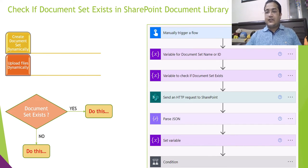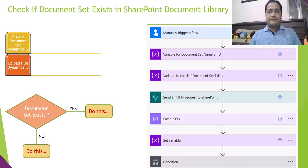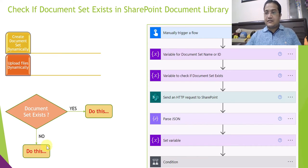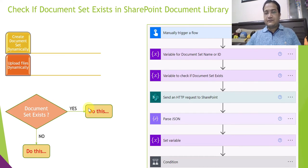The scenario here is: the document set is created, files are already uploaded, and now the user wants to upload more additional files to the same document set. So you need to check if the document set already exists. If it does, take some actions; if it does not exist, first create the document set and then upload the file.